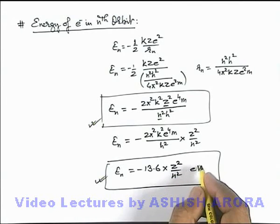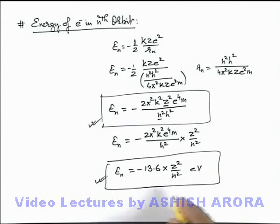Here always remember if you wish to convert it into joules, then the conversion factor is 1 electron volt is 1.6 into 10 to power minus 19 joules that can also be done easily.